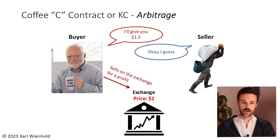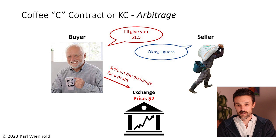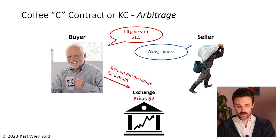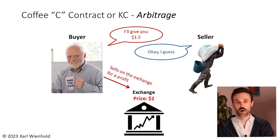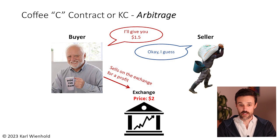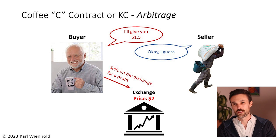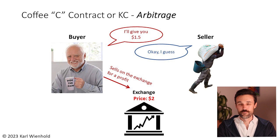Let's have a look at another example. Say this buyer says, 'I'll give you $1.50,' and the seller — either because they don't have access or don't know the exchange price is higher — accepts and sells for $1.50. Well, then this buyer, recognizing an arbitrage opportunity, buys for $1.50 and goes to the exchange and sells for $2, making a $0.50 profit. This is taking advantage of arbitrage.